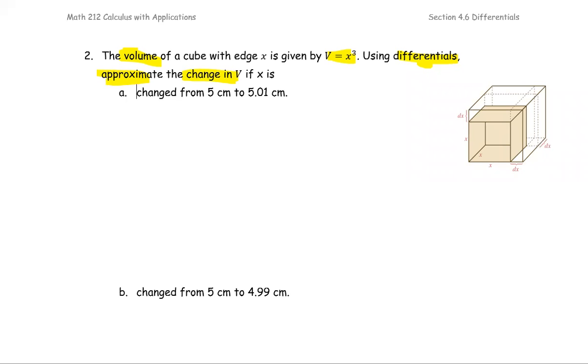The idea is to use the differential dy to approximate the change in y. The change in y is y2 minus y1, or the difference of the two y values. The first y value occurs when x equals 5, so I name it as x1, and x2 is 5.01.